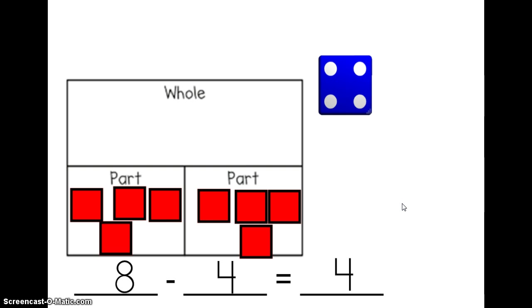When we use a part-part-whole mat with subtraction, we always start with our whole. Our whole is our big number. We take away or take apart some of that number into one part, and then we see what is left to put into our other part. Let's try another one.